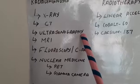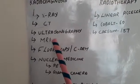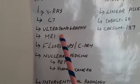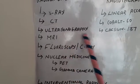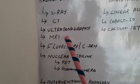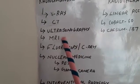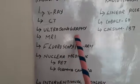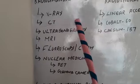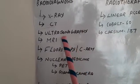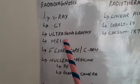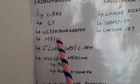MRI uses superconducting magnets to generate images. Just like CT, MRI can generate axial, sagittal, and coronal cross-sectional images. The key difference is that CT uses ionizing radiation, whereas MRI uses superconducting magnets with no ionizing radiation.